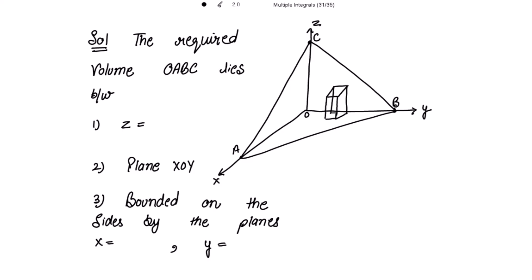The required volume OABC lies between the given plane x/a + y/b + z/c = 1 and the XOY plane.